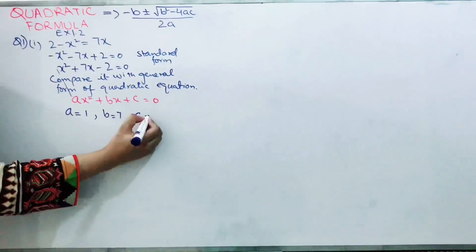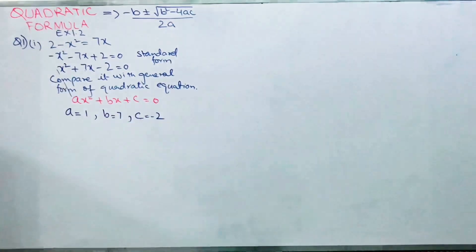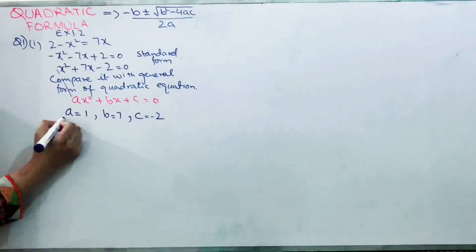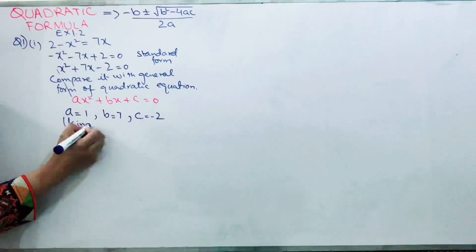So these are your values: a equals 1, b equals 7, and c equals minus 2. Now using the quadratic formula,